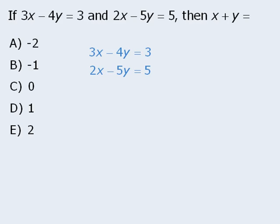So here we'll solve this system using the elimination method. First we'll take the top equation and multiply both sides by 2 to get 6x minus 8y equals 6, and we'll take the bottom equation and multiply both sides by 3 to get 6x minus 15y equals 15.